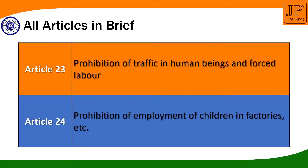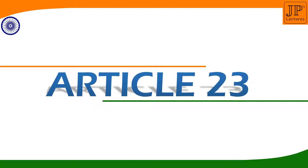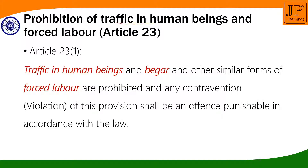Article number 23 deals with the prohibition of trafficking in human beings and forced labor. Article number 24 deals with the prohibition of the employment of children in factories and other areas. Now, article number 23 — trafficking in human beings, or human trafficking — refers to the sale and purchase of human beings for any purpose.